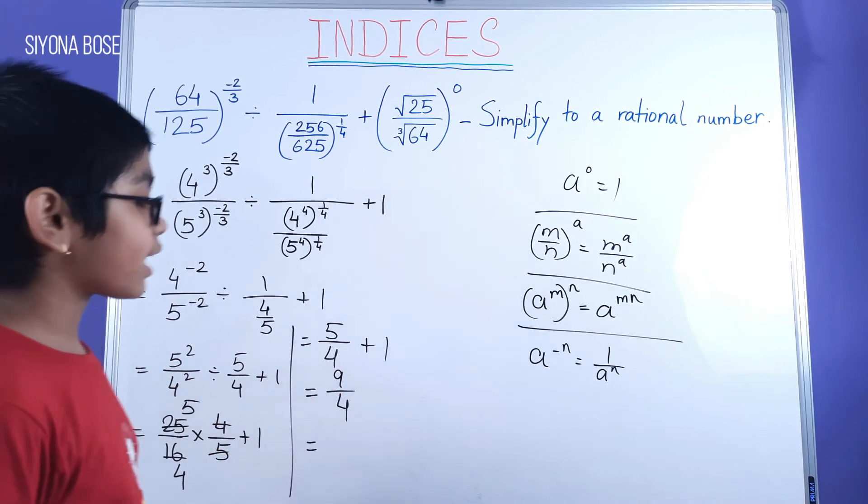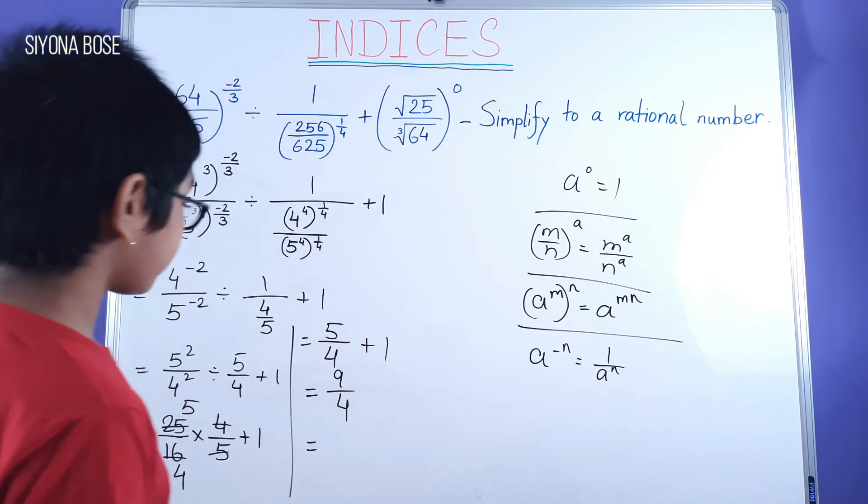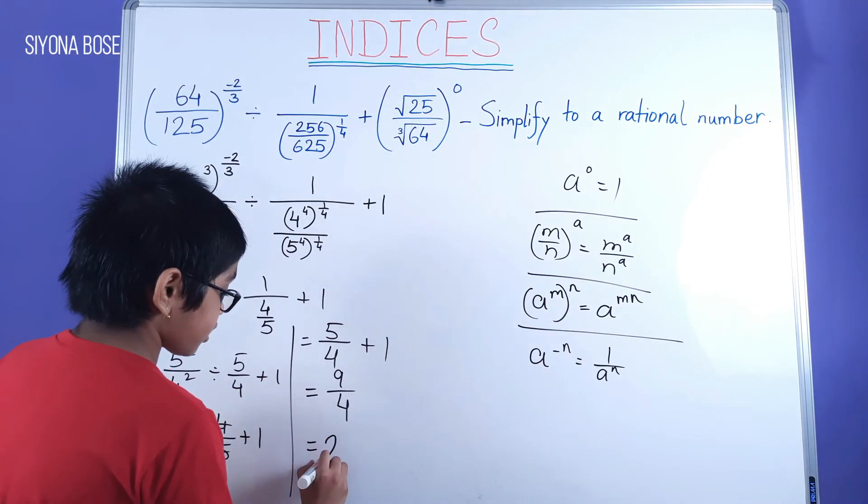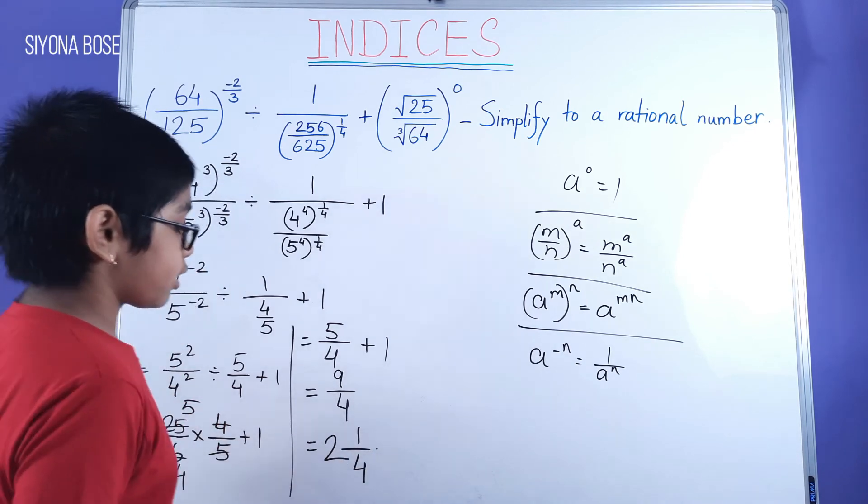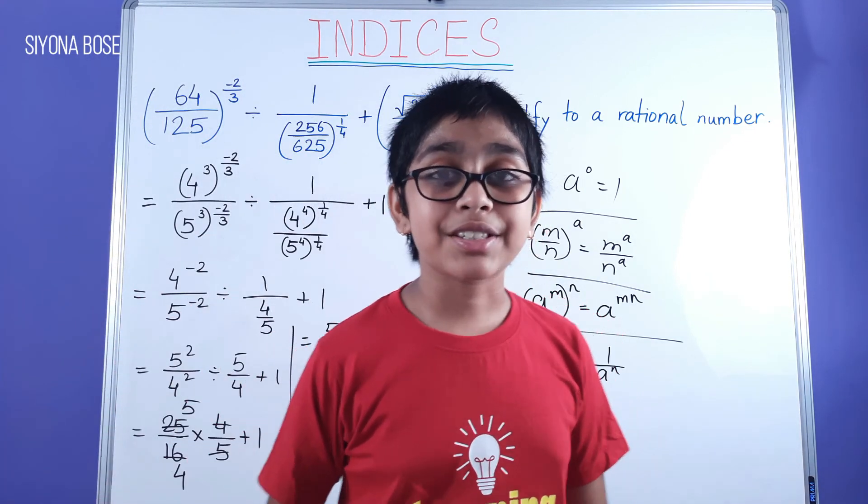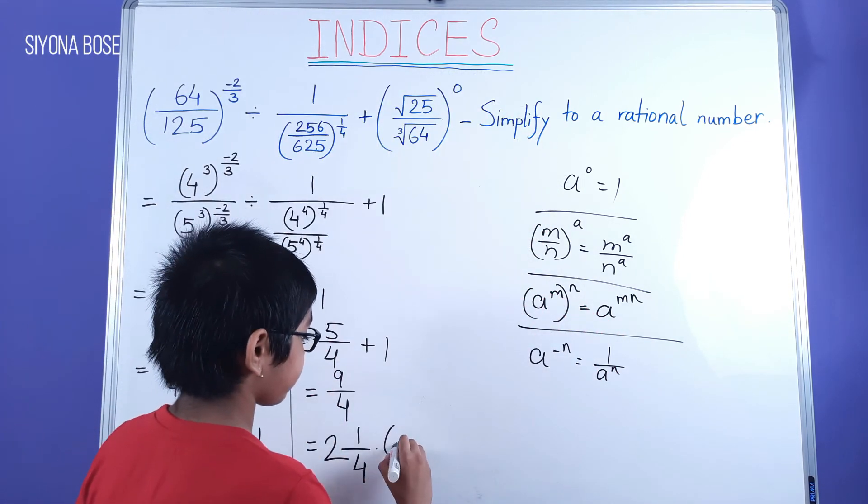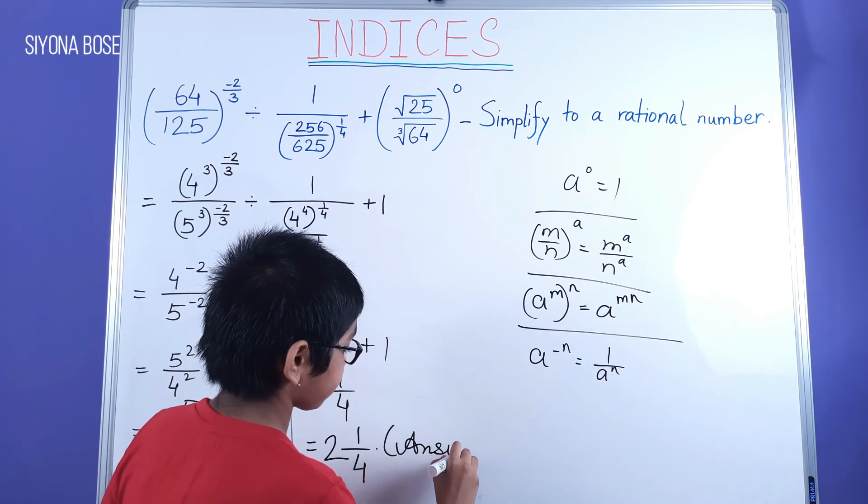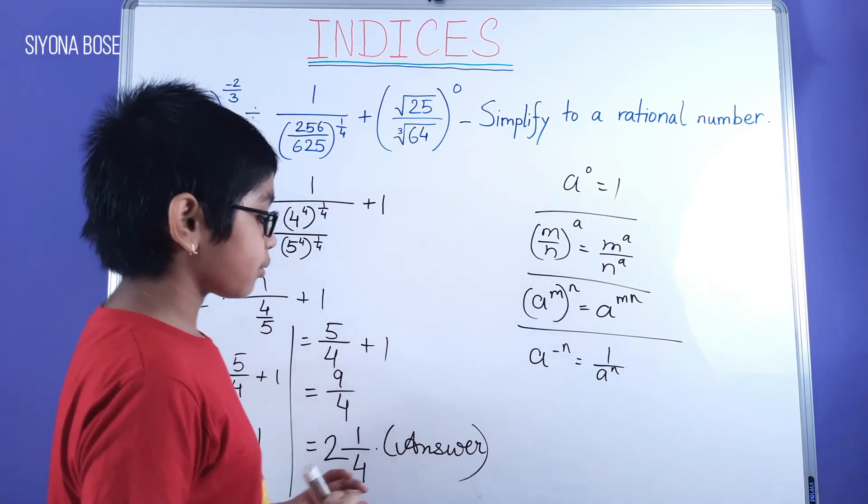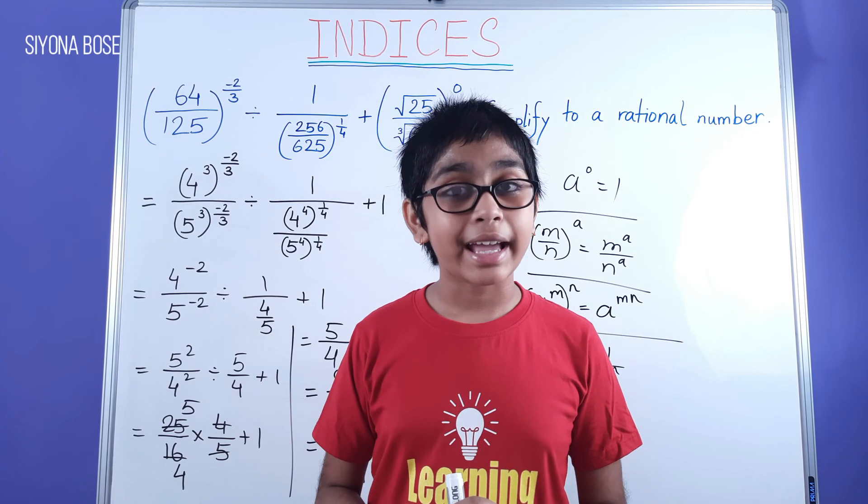And now converting that into a mixed fraction, we have 2 and 1 by 4, which is our final answer. Now we may take a look at the board.